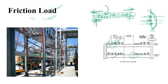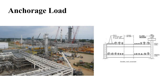Another type of lateral pipe load is anchorage load, which occurs mainly at pipe bends — locations where pipes change direction and are attached to the beam. At these bend locations you must consider the anchorage load in your design.